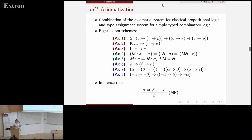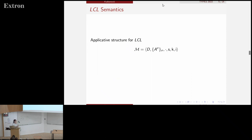As I said, I will present syntax, axiomatization. I already did that part. And I want to say also what are the semantics or the models for LCL. So we start with the notion of an applicative structure, which we have defined as this tuple consisting of some non-empty set D called domain. Then we have a family of subsets of D. So for each type sigma, we have a subset A sigma, which is a subset of D.